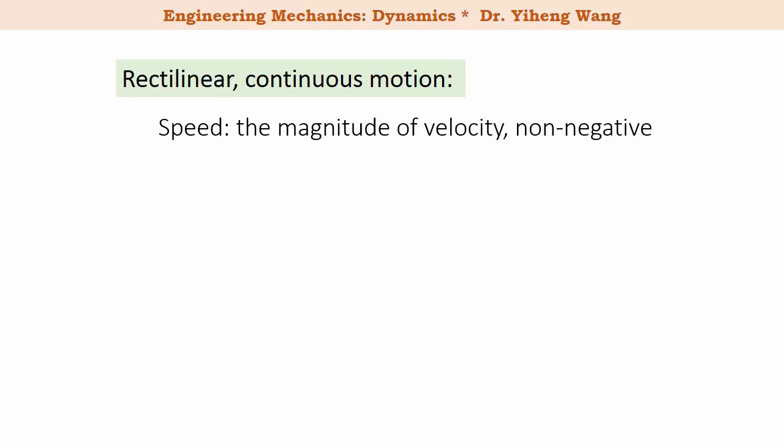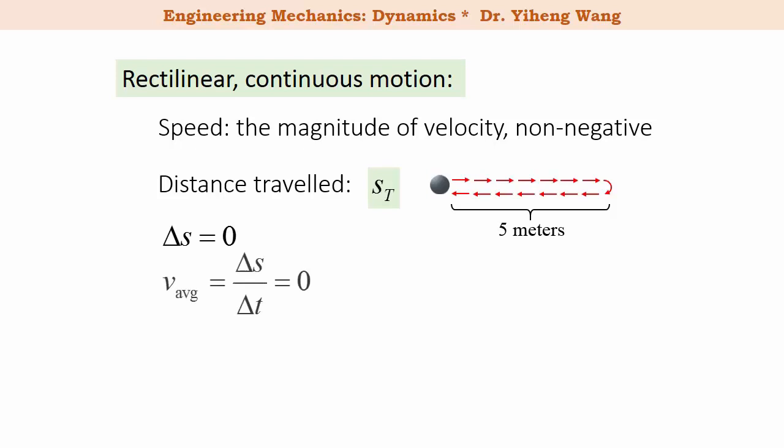Another scalar quantity we sometimes use is distance traveled, sT. It is the length of the actual path traveled, and it is not the same as displacement. For example, if this ball travels five meters to the right and returns to its original position, all in five seconds. Since there is no change in the position of the ball, its displacement is zero, therefore its average velocity is also zero. However, its distance traveled is a total of ten meters, and therefore its average speed is ten meters over five seconds, which is two meters per second.